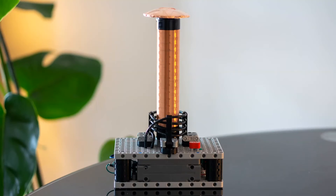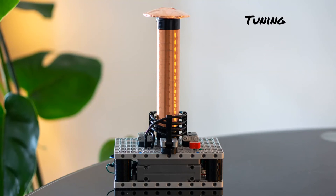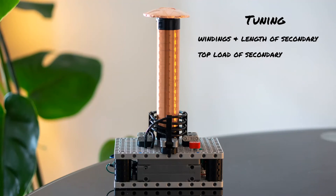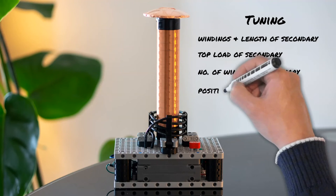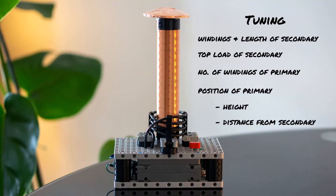I'll touch briefly on tuning here in case your slayers aren't performing too well. In general, there are a few key ways in which we can tune our slayers. We can change the windings and length of the secondary coil. We can change the top load of the secondary coil. We can change the number of windings on the primary coil. We can change the position of the primary coil, meaning both height and distance from the coil. And we can change the distance between the loops in the primary coil. By playing with these variables, we can squeeze out a little more performance and stability from the slayer.